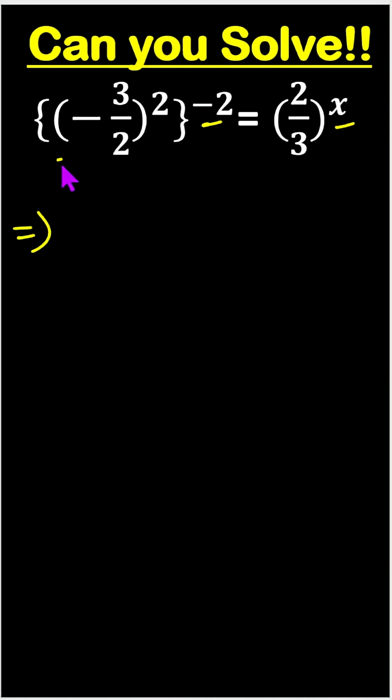So, first this one minus 3 by 2 whole square, so minus square means plus and 3 square and 2 square means 9 by 4 and then whole to the power minus 2 equals to 2 by 3 whole to the power x.